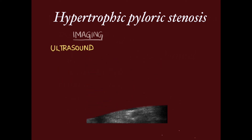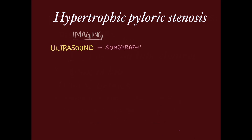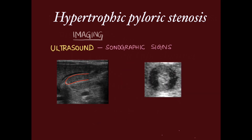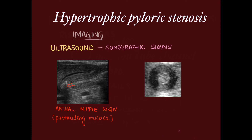The named sonographic signs include the cervix sign, where the hypertrophied mucosa appears like a cervix. The mucosa can protrude into the duodenum, which is known as the antral nipple sign, and on cross section it is known as the target or donut sign.